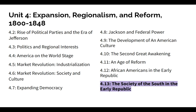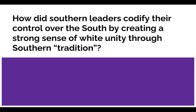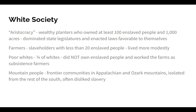Southern leaders codified their control over the South by creating a strong sense of white unity through Southern tradition. The aristocracy of the South were the wealthy planters who owned at least 100 enslaved people and 1,000 acres of land, much of which would be cotton cultivation. These wealthy planters absolutely dominated the state legislatures and enacted laws favorable to maintaining economic and political control for the very wealthy plantation owners.